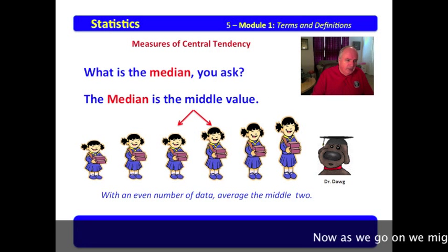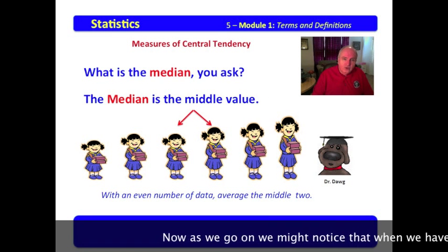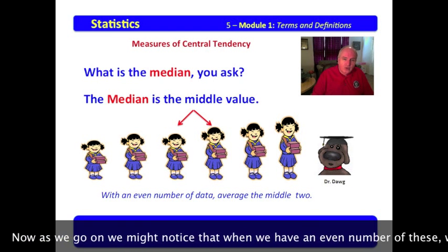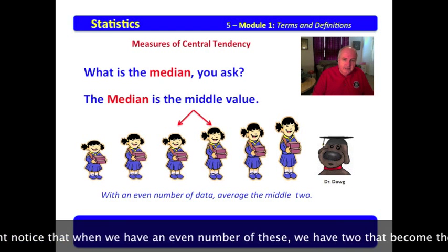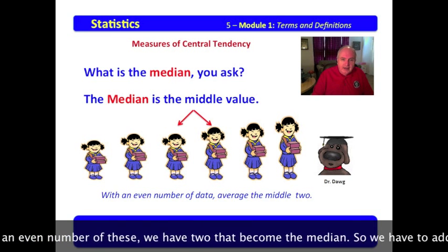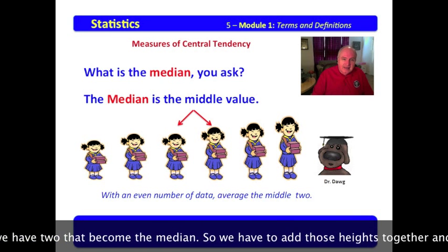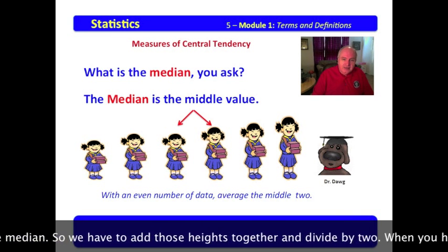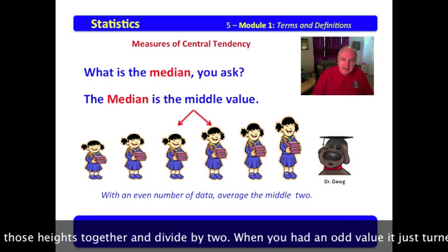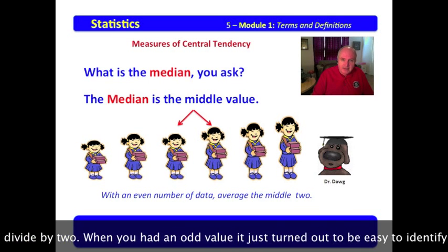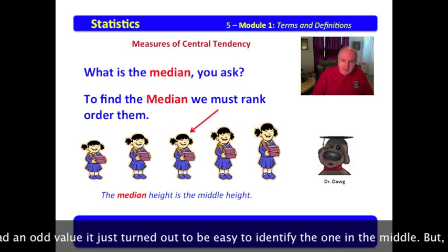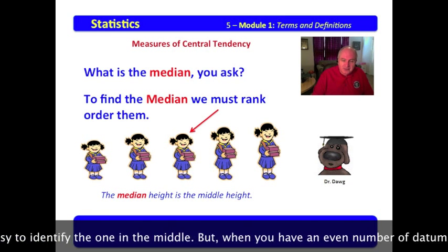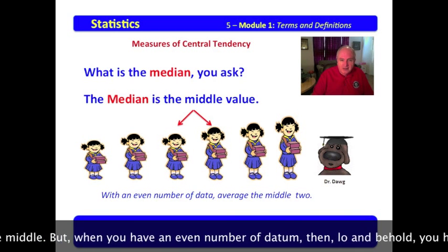Now, as we go on, we might notice that when we have an even number of these, we have to have two that become the median, so we have to add those heights together and divide by two. When you had an odd value, it just turned out quickly to be easy to identify the one in the middle.